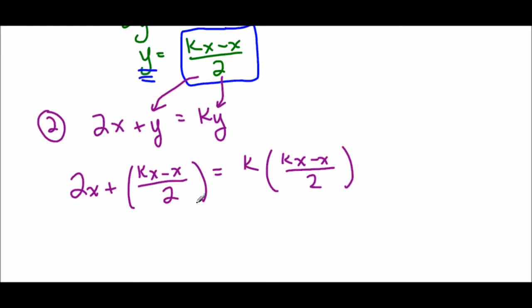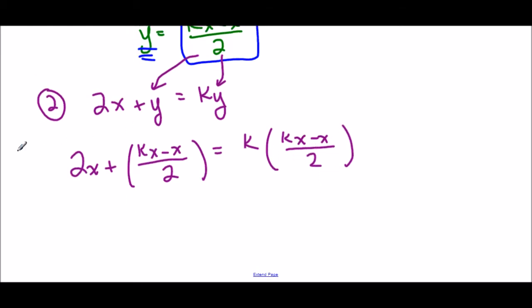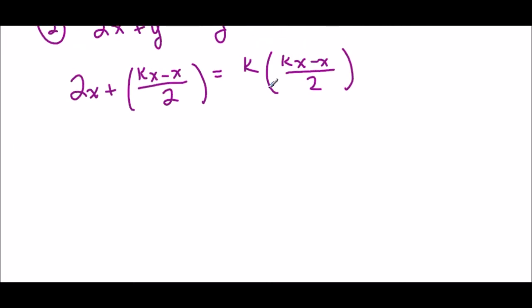So I'm just going to use a big bracket because I know it's a big item. So instead of 2x plus y, I now have 2x plus kx minus x over 2 equals k times kx minus x over 2. So I'm trying to solve for x. So I know there's a k in there, but if I solve for x, that's the goal of solving a system of equations. So I'm going to solve for x and just deal with the k like a number.